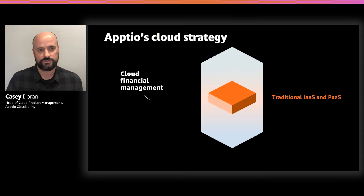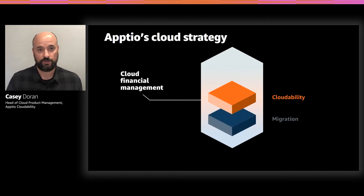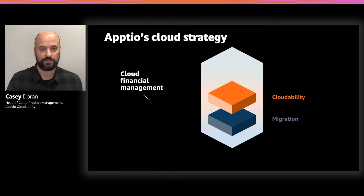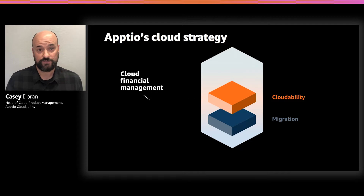You have to think about more traditional workloads — infrastructure as a service, platform as a service — things you may be running on Amazon, like Amazon EC2 and Amazon EKS. This is the focus of our Cloudability product. You also need to think about migration projects if you're moving workloads to the cloud, tracking performance of those migrations and making sure you're allocating cost appropriately. This is the focus of our Cloudability Shift product.